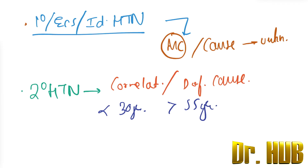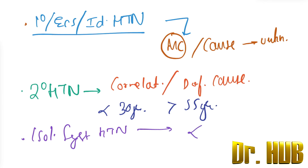Next is isolated systolic hypertension. In isolated systolic hypertension, the reading is less than 130 systolic and greater than or equal to 80 mmHg diastolic.